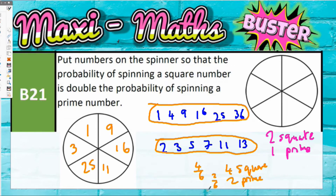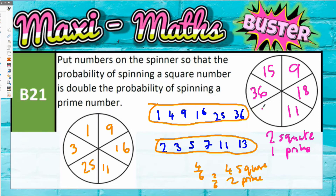You could also use just two square numbers. For example, choose 9 and 36, then only one prime number such as 11. The remaining numbers on the spinner must not be square or prime — for example, 15, 18, and 24 would work. That gives a probability of square of 2 out of 6 (since 9 and 36 are the two square numbers) and prime of 1 out of 6. Two out of 6 is double one out of 6.